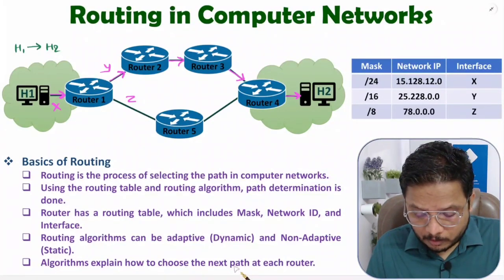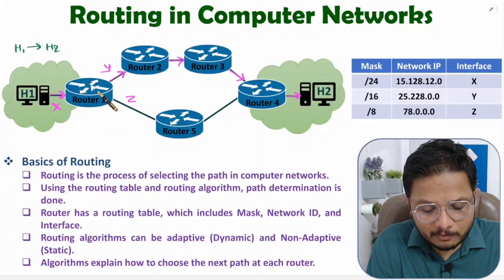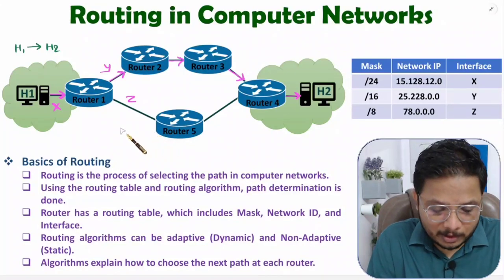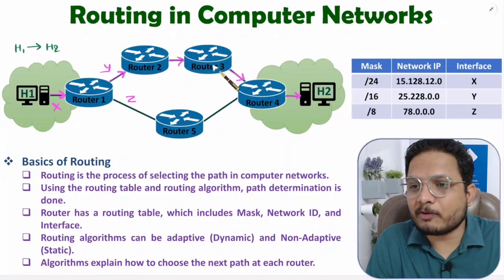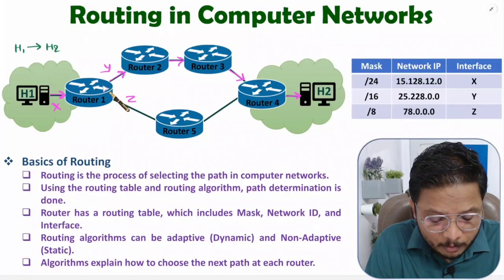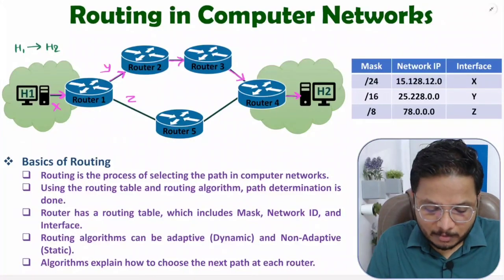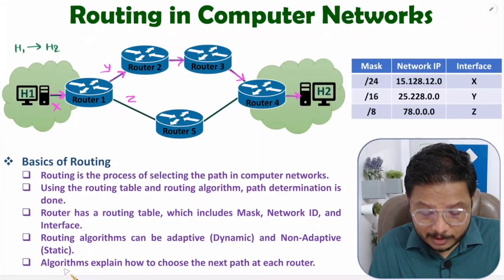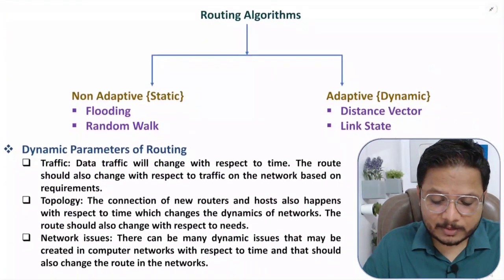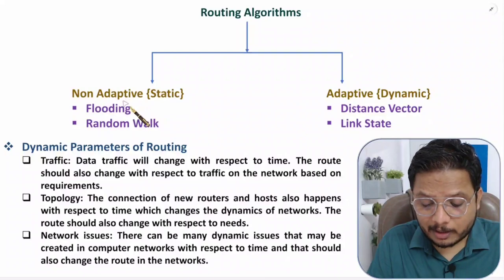The algorithm explains how to choose a path from one router to another. When a frame comes to Router 1, Router 1 decides whether to forward it to Router 2 or Router 5. Router 1 only decides the next hop — it does not decide what happens at Router 3's side. This decision-making is defined by routing algorithms.